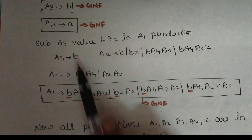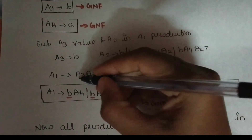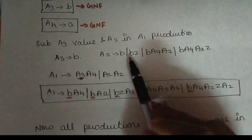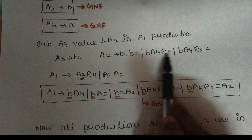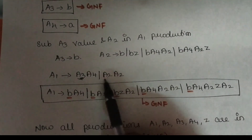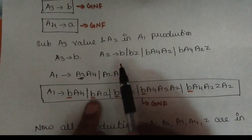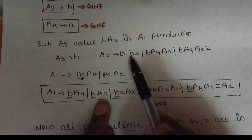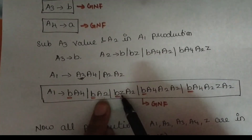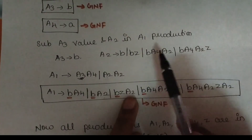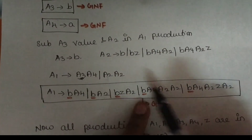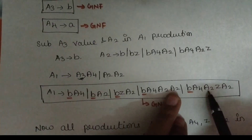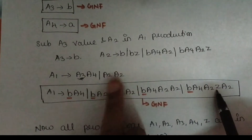For A3, you can use B, and you can use A2. All the production values should be added. A2 has right side b and it's a non-terminal, and we also have A2. So it's b, Z and it's A2. If b, A4, A2, b, A4, A2, then it's A2. If b, A4, A2, A2, A2, b, A4, A2, A2, A2.